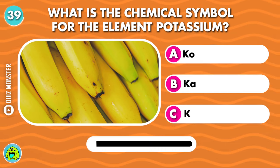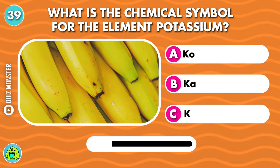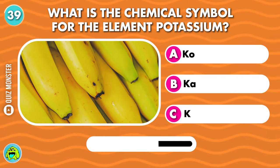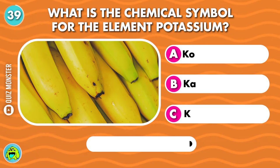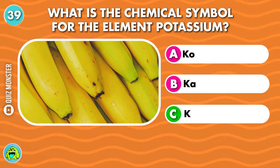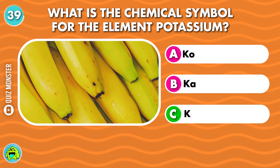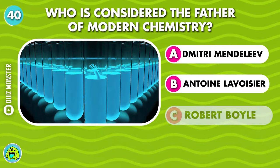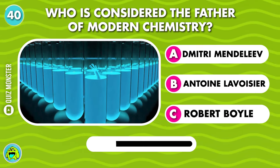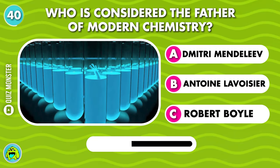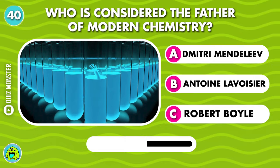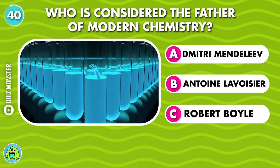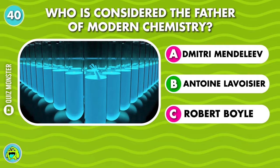What is the chemical symbol for the element potassium? K. Who is considered the father of modern chemistry? Antoine Lavoisier.